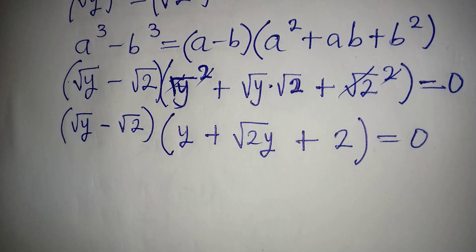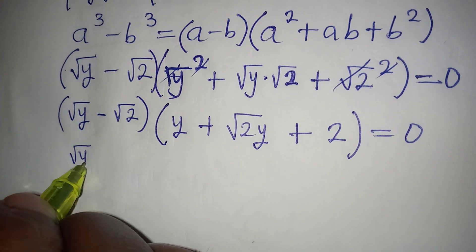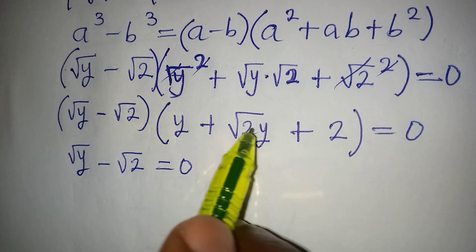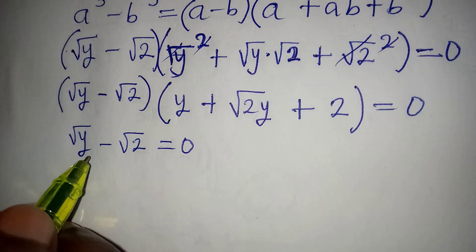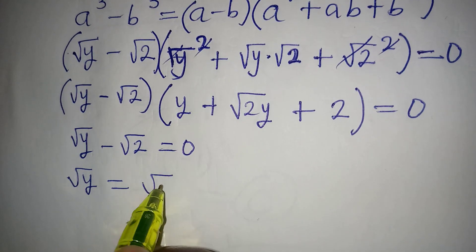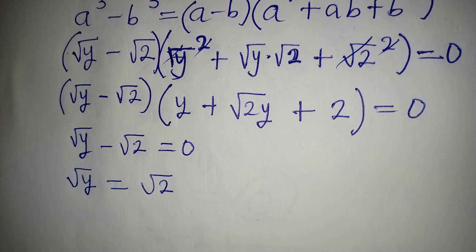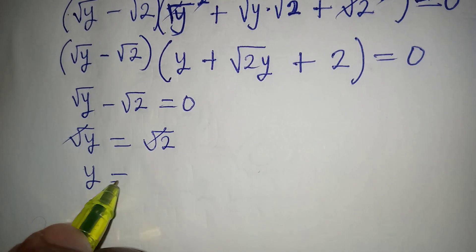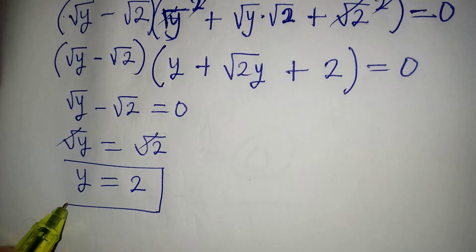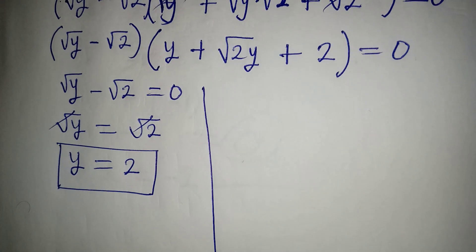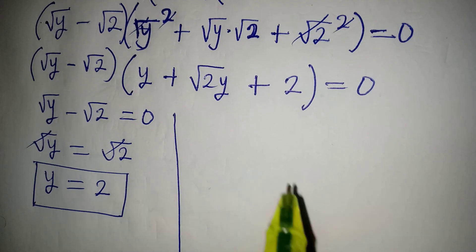From here, I can now apply the zero product rule. So square root of y minus square root of 2 equals 0, or what we have in the second bracket is also equal to 0. From the first factor, square root of y equals square root of 2, so the squares cancel and y equals 2. This is the first value of y.